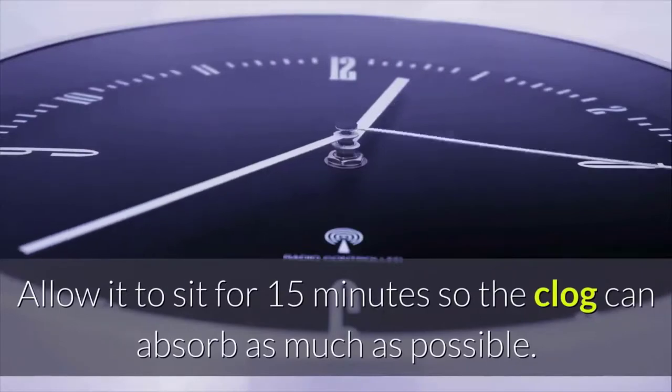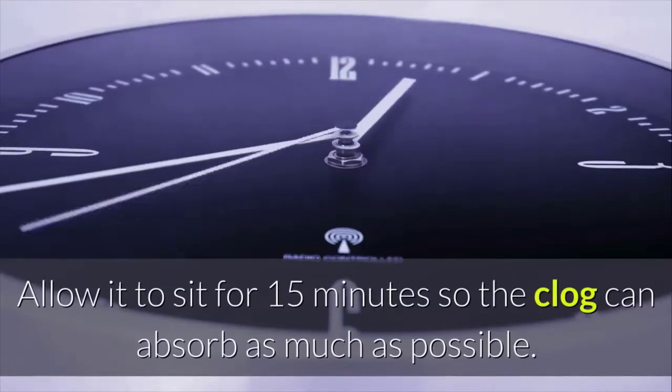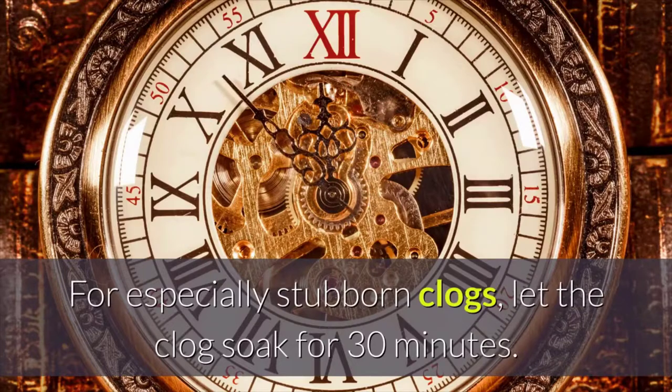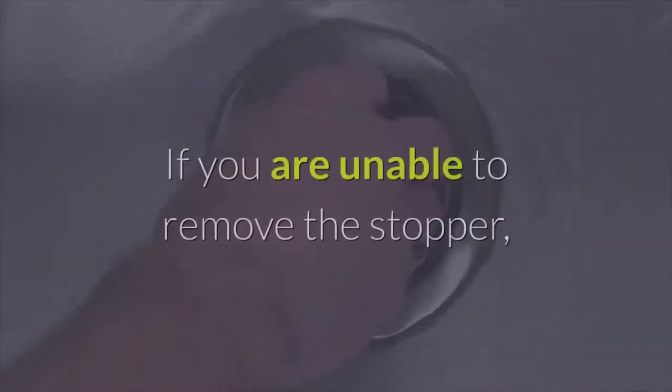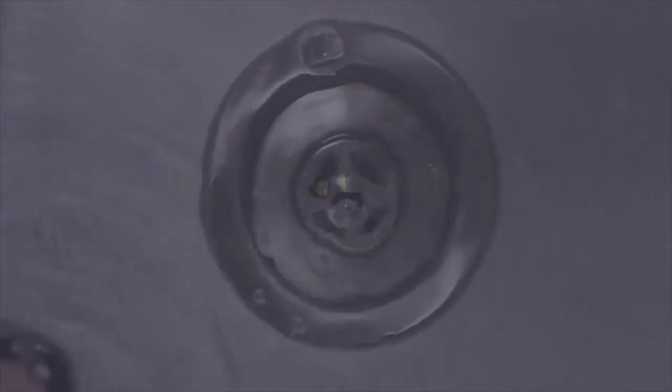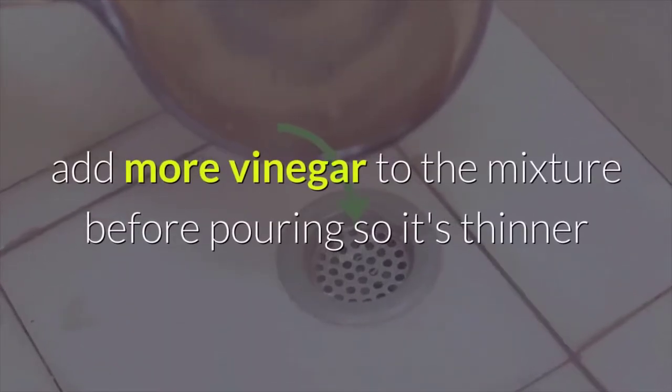Allow it to sit for 15 minutes so the clog can absorb as much as possible. For especially stubborn clogs, let the clog soak for 30 minutes. If you are unable to remove the stopper, add more vinegar to the mixture before pouring so it's thinner.